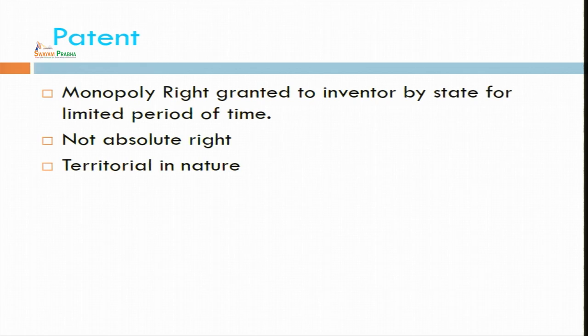It is also an exclusive or monopoly right for the person who has invented a new thing which is useful to the society, which has novelty, or which has some inventive step. This patent concept is a species of intellectual property right which is genus in nature. This right is not absolute in nature; it is limited in character because it is given for 20 years, and after 20 years that invention or patent comes into the public domain.